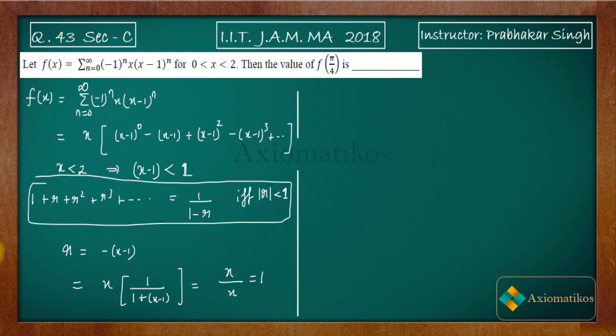So see that your function f(x) is actually a continuous function. Sorry, not continuous, it is a constant function. So f(x) = 1. It implies that what is the value of f(π/4)? Because see it is a constant function, so it will be 1. So this is how you should be actually solving this problem.